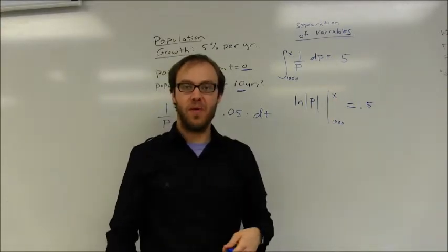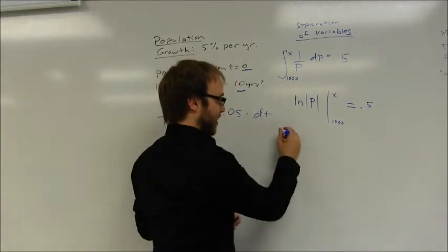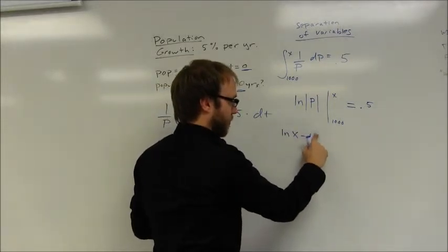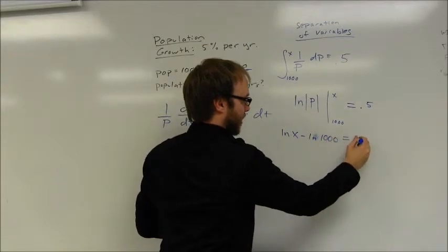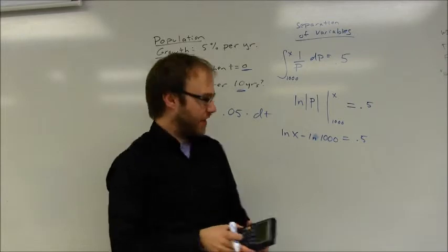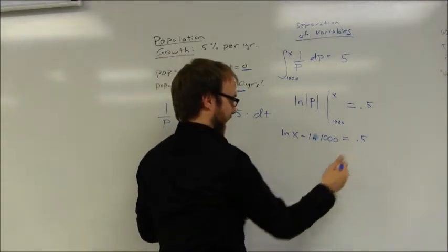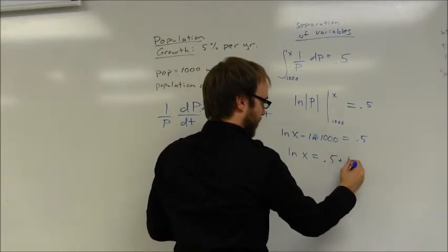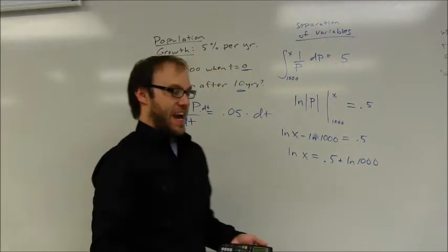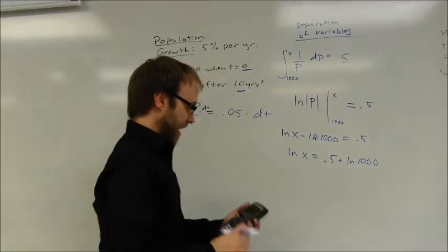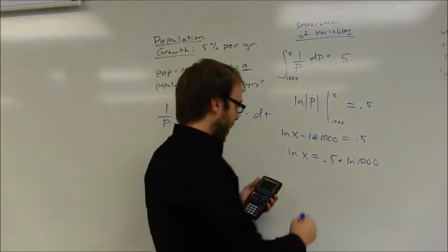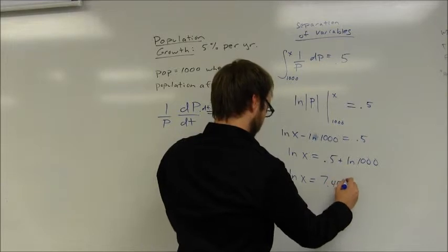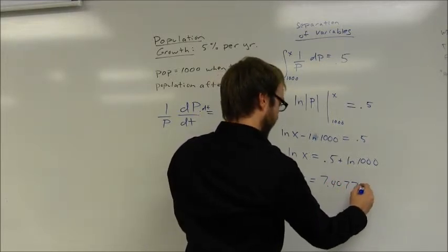So all I need to do here is substitute values in. The population is increasing. Both of these values are going to be positive. So the absolute value is really not going to change anything here. Really it's just the natural log of x minus the natural log of 1,000 equals 0.5. You can make a couple quick calculations on a calculator here. You can find the natural log of 1,000 and add that to both sides. So that's the natural log of x equals 0.5 plus the natural log of 1,000. And at this point it really depends on if you need to round or that kind of thing. 0.5 plus the natural log of 1,000 is approximately 7.40775.